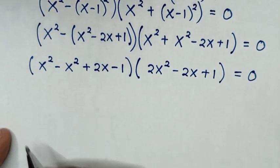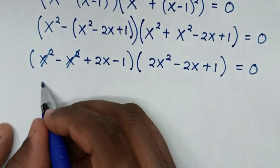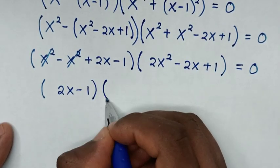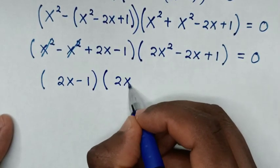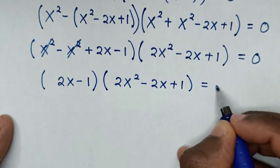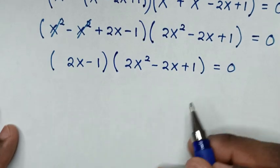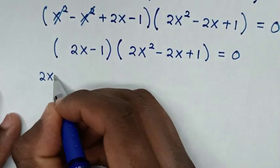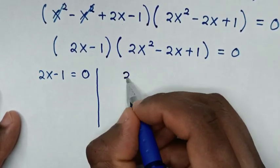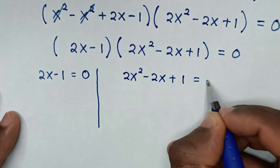After cancelling x squared minus x squared equals 0, we get the factored form: (2x minus 1)(2x squared minus 2x plus 1) equals 0. This gives two solutions: 2x minus 1 equals 0, and 2x squared minus 2x plus 1 equals 0.